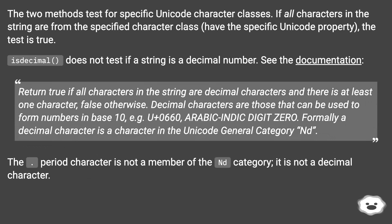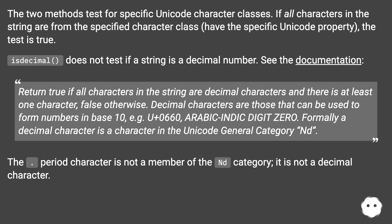The two methods test for specific Unicode character classes. If all characters in the string are from the specified character class and have the specific Unicode property, the test is true. IsDecimal does not test if a string is a decimal number.